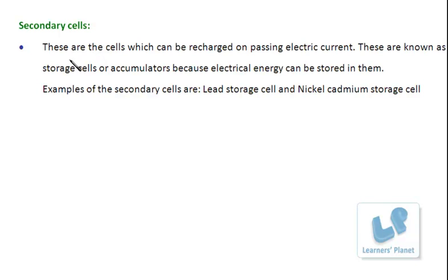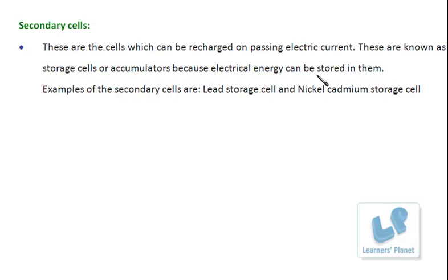Secondary cells are cells which can be recharged by passing electric current. When they are discharging, they give out electric current, and they can be recharged by passing electric current again. These are known as storage cells or accumulators because electrical energy can be stored in them.